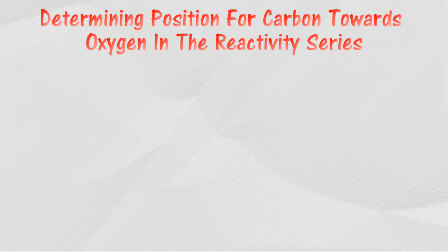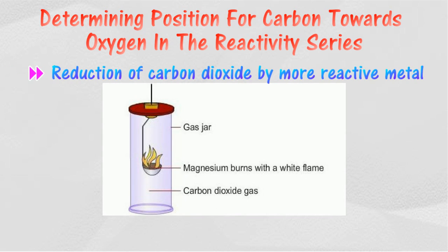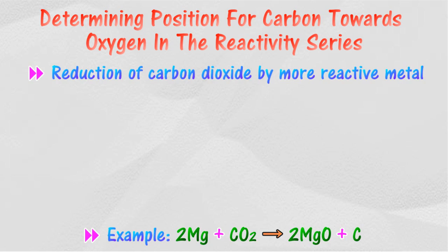The position of carbon towards oxygen in the reactivity series can be determined by the reduction of carbon dioxide by a more reactive metal. In this reaction, a strip of burning metal is placed in a jar filled with carbon dioxide gas. If the metal is more reactive than carbon, it remains lit with a bright flame, producing black fragments and white powder. If carbon is more reactive than the metal, no reaction occurs.